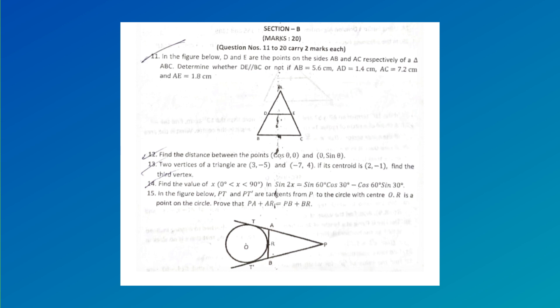Find the value of x (0 < x < 90°) in sin 2x = sin 60° cos 30° - cos 60° sin 30°. In the figure, PT and TS are tangents from P to the circle with center O. R is a point on the circle. Prove that PA + AR = PB + BR.